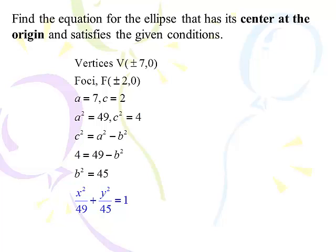So the a is 7, the c is 2, so a squared is 49, and c squared is 4, again. So 4 is equal to 49 minus b squared. b squared equals 45. And because the vertices are on the x-axis, a squared goes underneath the x squared, and b squared goes underneath the y squared. So x squared over 49 plus y squared over 45 equals 1. Moving on.